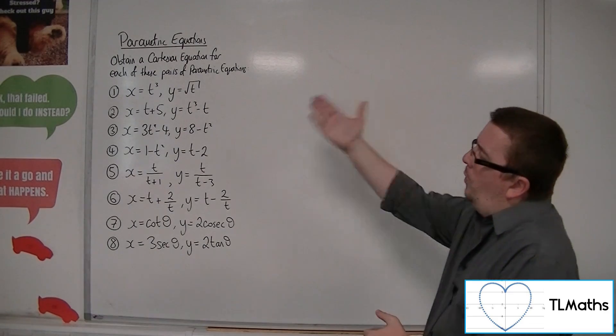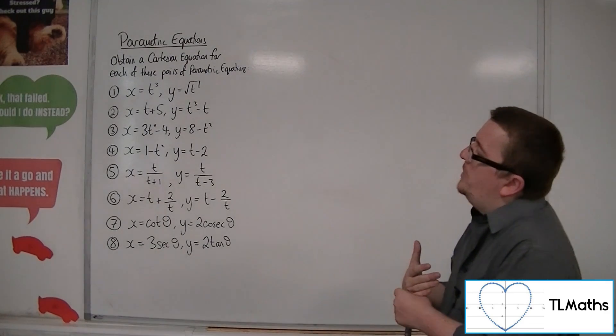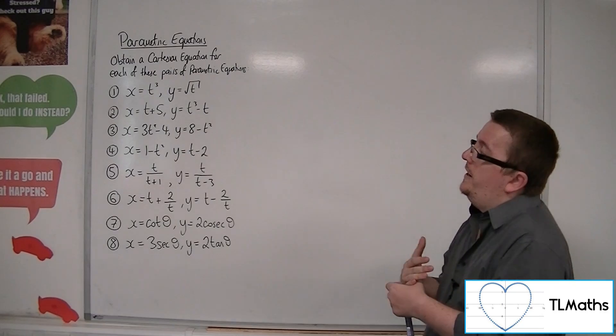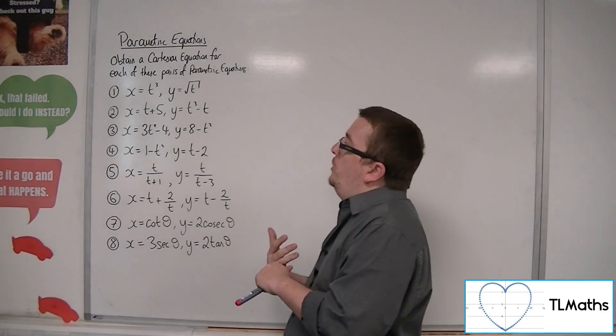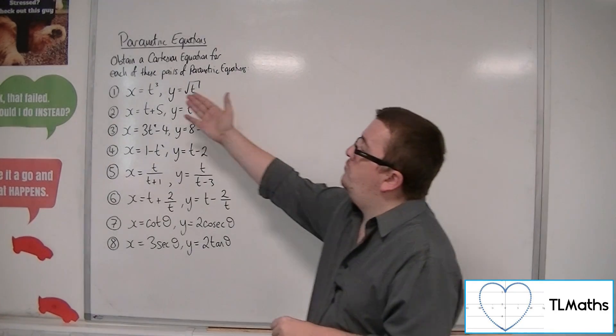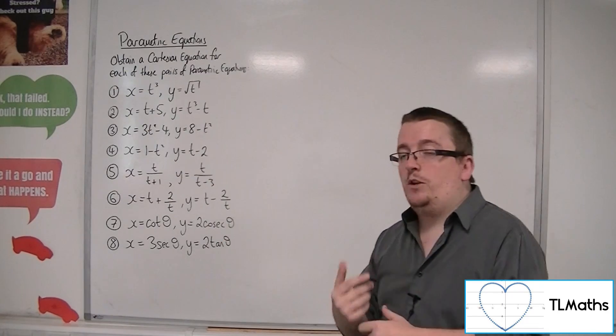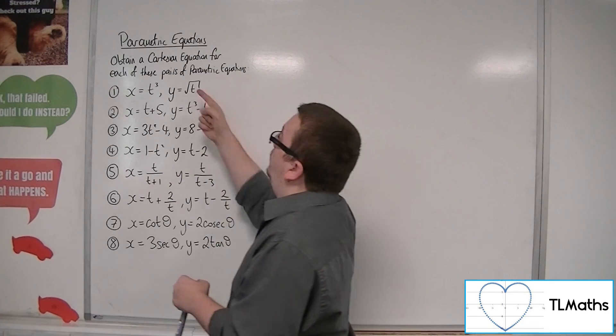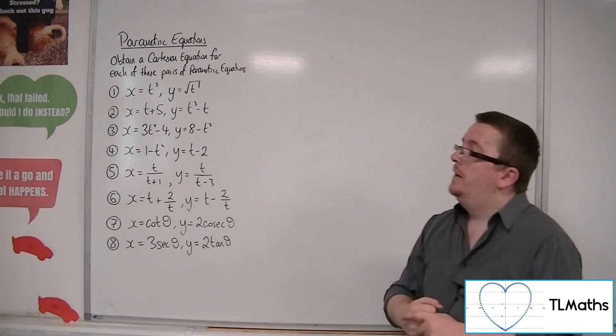Now, if we have a look at number one, we've got x equals t cubed, and y equals the square root of t. Now, theoretically, what you could do is you could cube root both sides here to get t equals the cube root of x, and then substitute it into y.